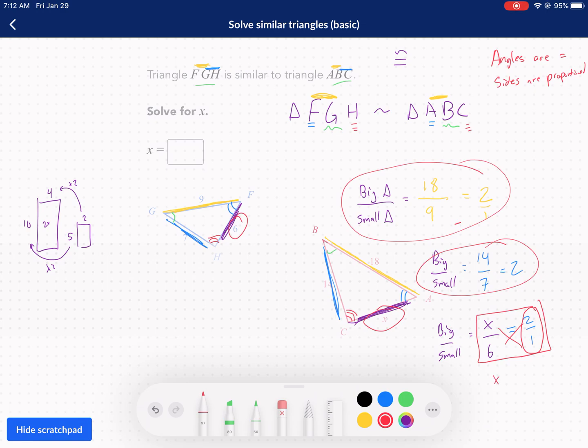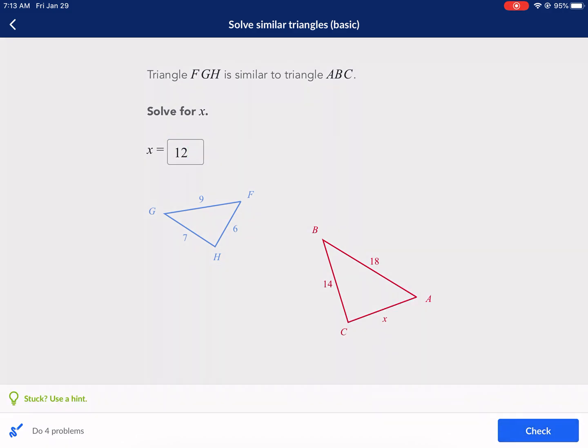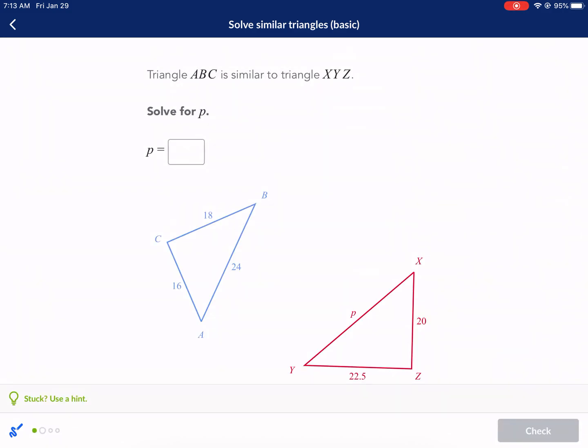We do x times 1 gives me x. 6 times 2 gives me 12. So we get x equals 12. That makes sense because it's twice as big. All these sides were times 2 to get the bigger sides. It's a scale factor of 2. That's what we call scale factor. And we know everything checks out. 9 times 2 is 18, 7 times 2 is 14, 6 times 2 is 12. X equals 12. And there we go. All right, moving on.